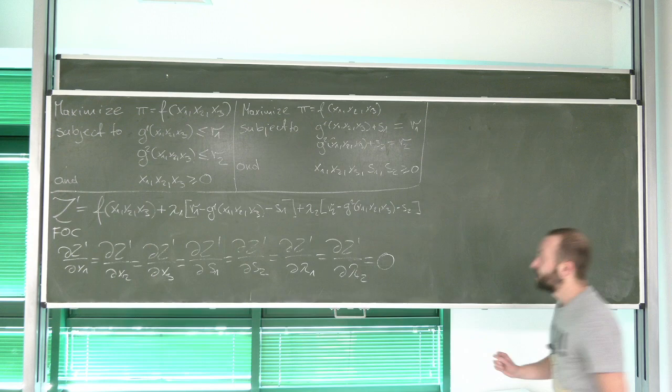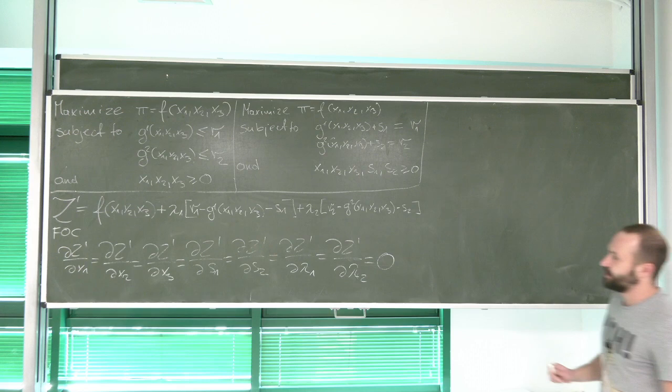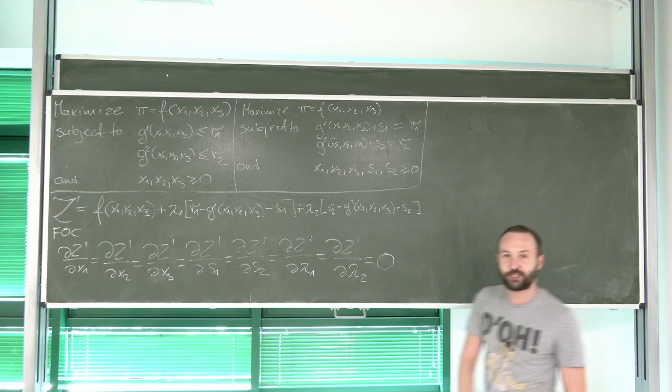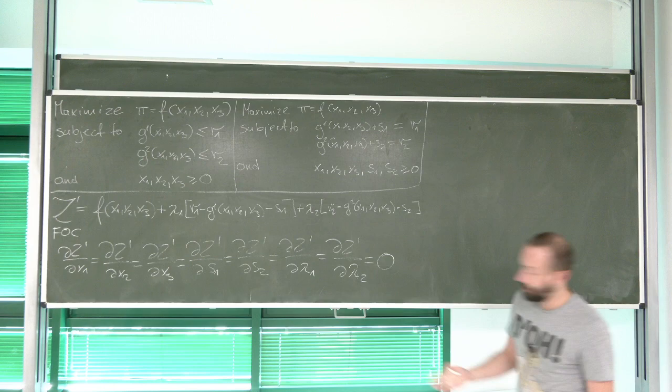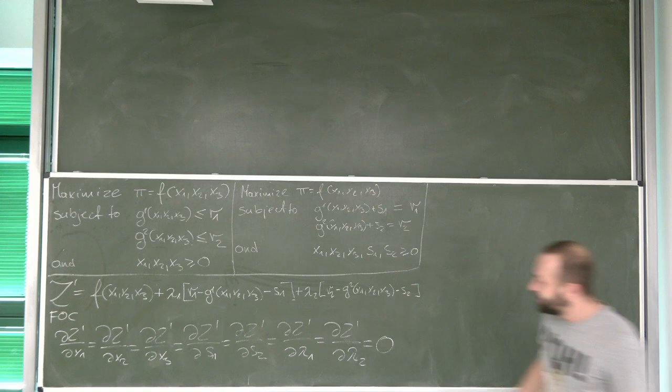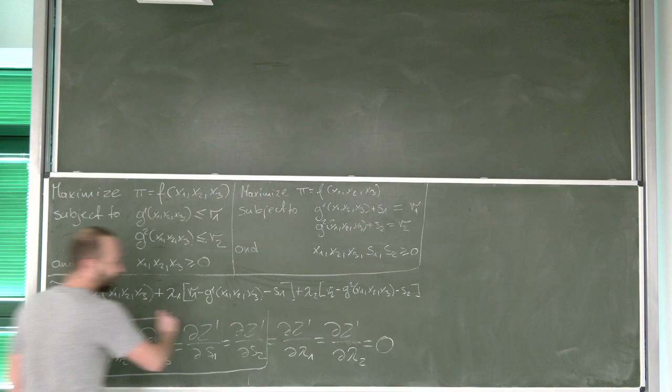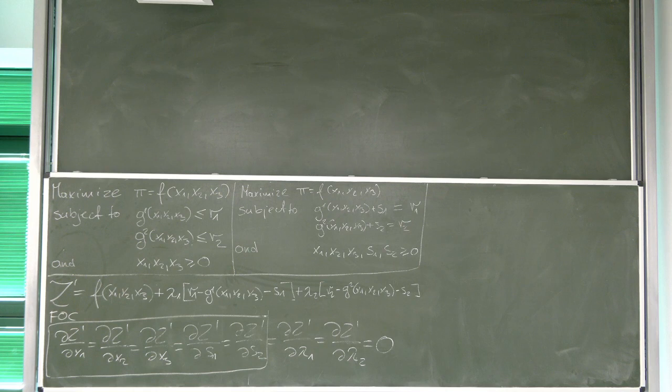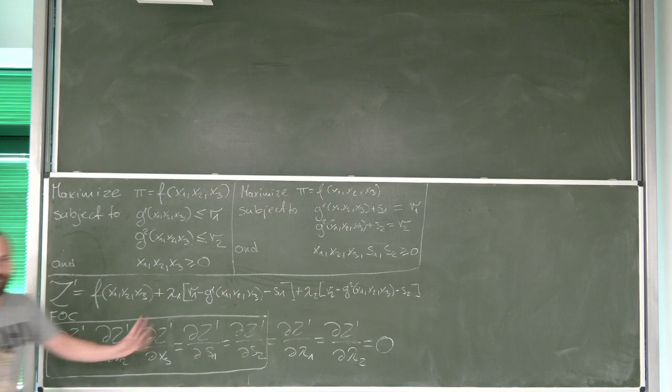However, there is another thing we should remember. The variables x1, x2, x3, as well as S1 and S2, are given non-negativity conditions. So maybe for these five variables, we should use what we learned during our previous video. I'm going to introduce subscripts here — x1, x2, x3 will have subscript J, and S1, S2 will have subscript I.